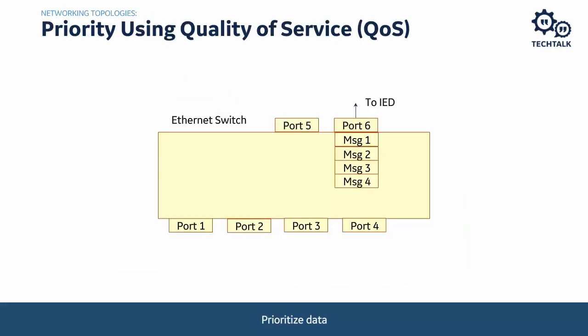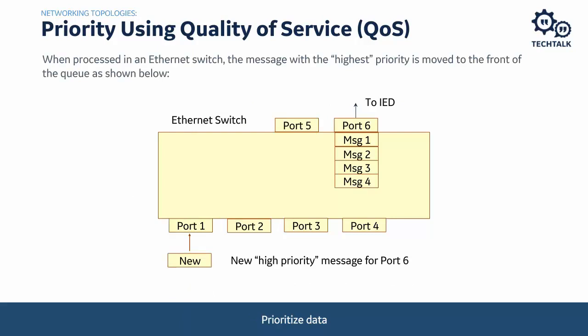Not all data are created equal — certain data are more critical than others. For example, a time-sensitive peer-to-peer GOOSE message must have priority over non-critical data. Typically in a switch, when data reaches a port and needs to be forwarded, it ends up in a queue because a port may not have enough bandwidth to handle all messages simultaneously. With quality of service (QoS), it gives the message a priority. If a message with high quality of service comes in, it gets bumped to the top of the queue and is sent over non-critical messages.